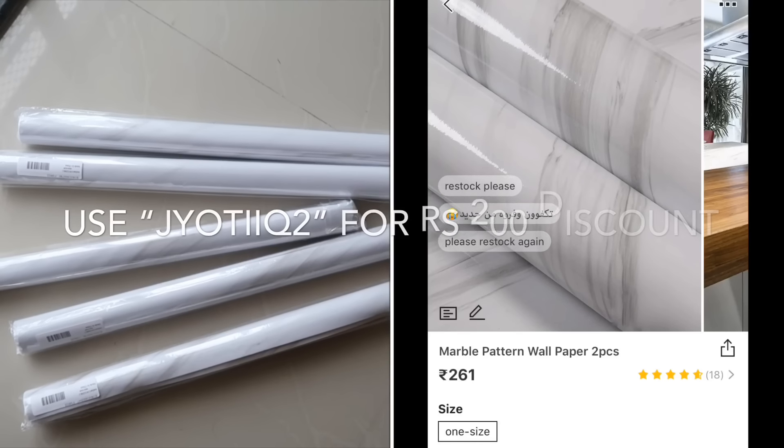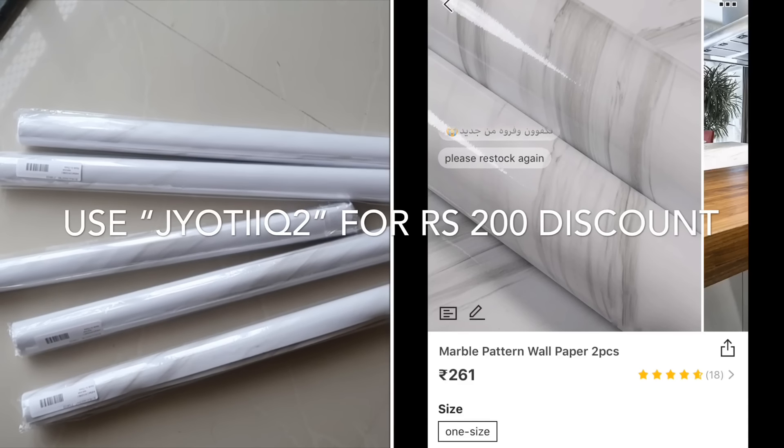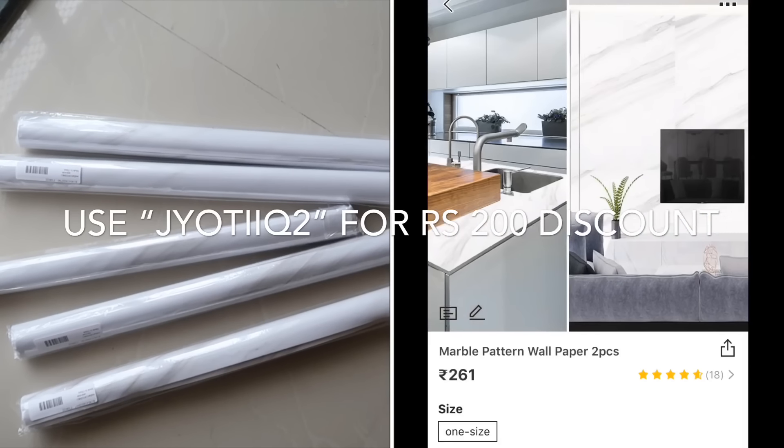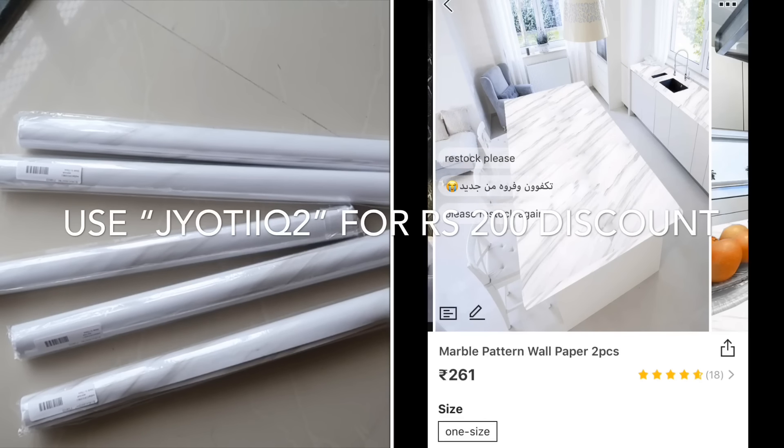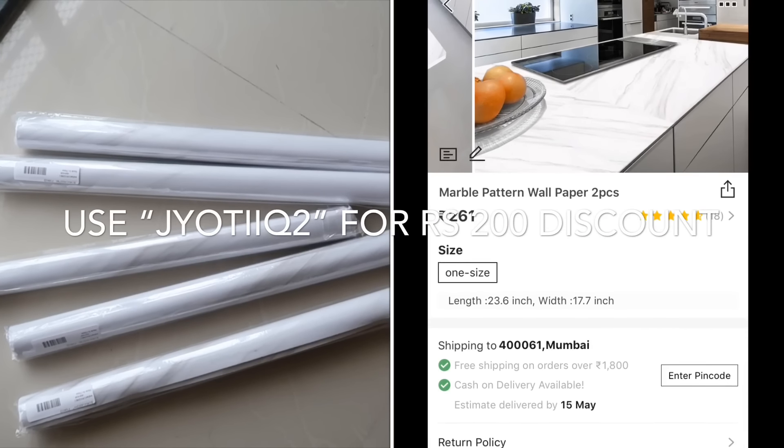I bought these wallpapers from SHEIN app. You can use my coupon code which is given in the description box below and get a discount of rupees 200 on the purchase of or above rupees 2,000. So yeah, let's not waste any time and quickly get into the video and show you how I did this.